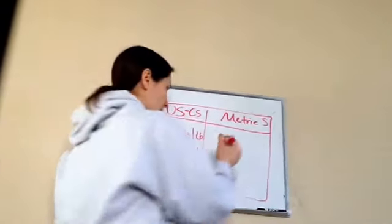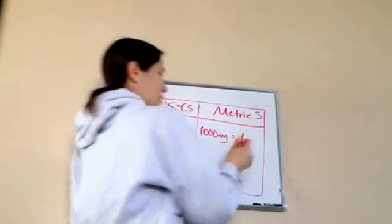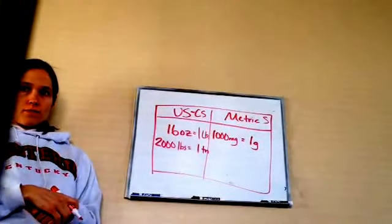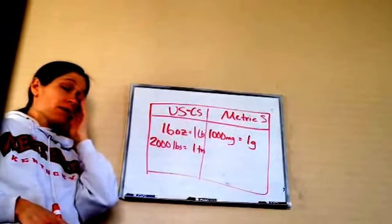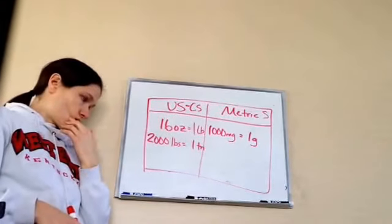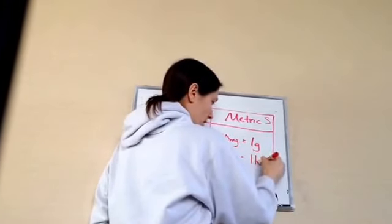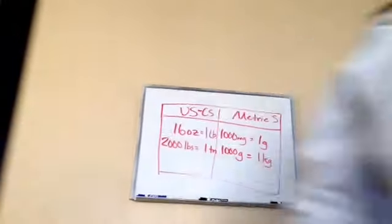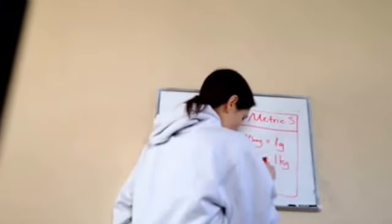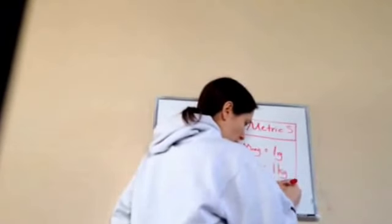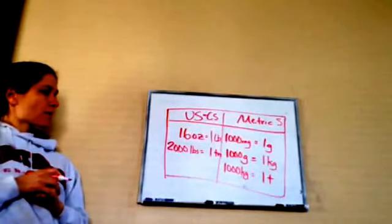Now let's look at the metric system side. 1,000 milligrams equals one gram. These have nothing to do with each other — I'm just showing you some different measurements of the metric system. 1,000 grams equals one kilogram. 1,000 kilograms equals one ton in the metric system.